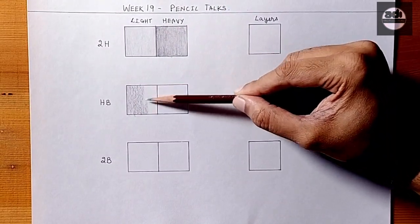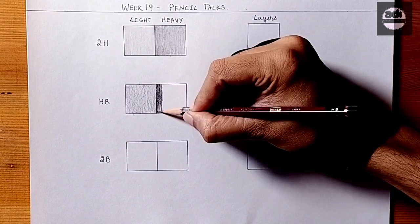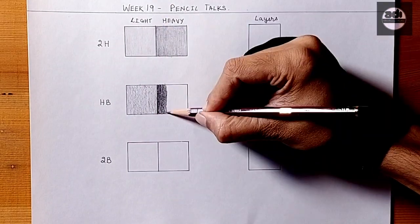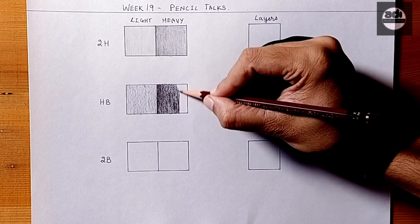My philosophy is that you layer and never press hard. This has two benefits apart from getting the right value: you can erase and avoid graphite shine.